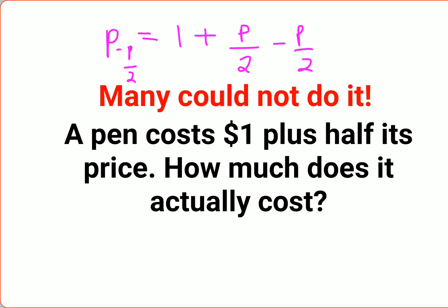So when you do that, here you are getting 2P minus P upon 2 equals 1. Which gets you basically P by 2 equals 1.